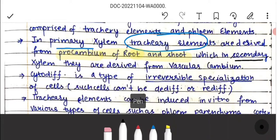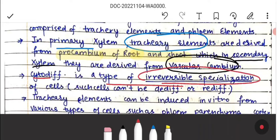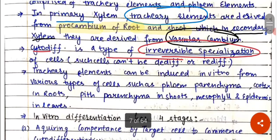In secondary xylem, tracheid elements are derived from the vascular cambium. The cytodifferentiation is a type of irreversible specialization of cells. Such cells can't be de-differentiated or re-differentiated.